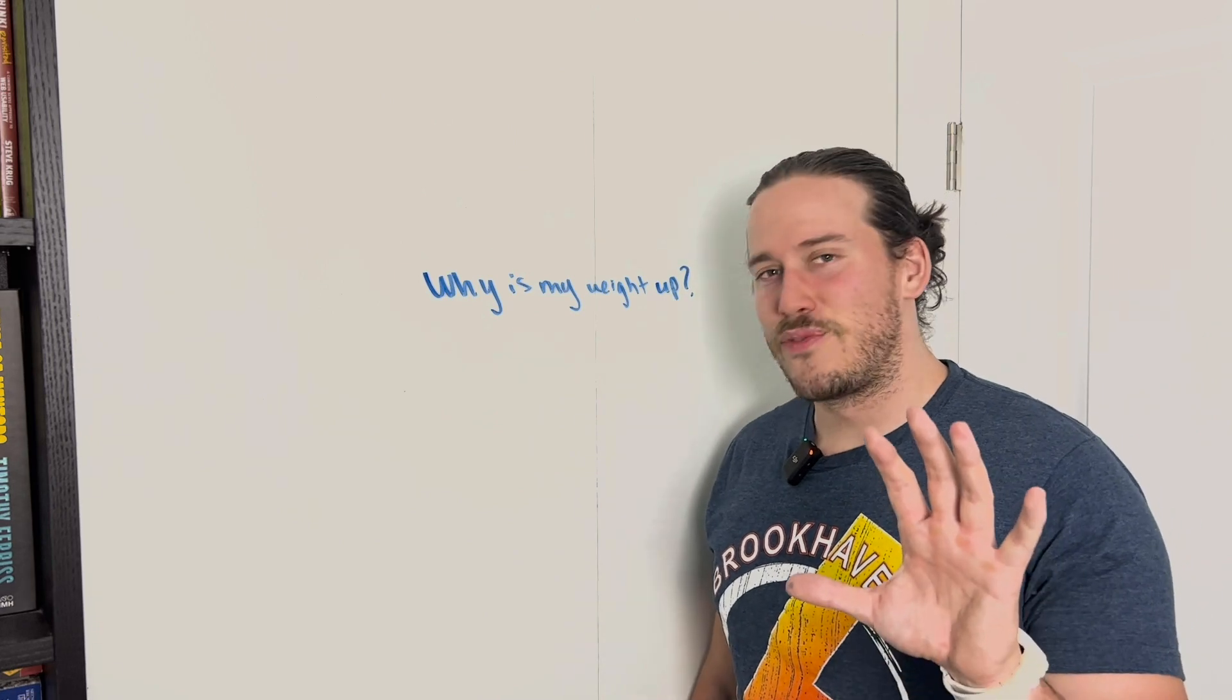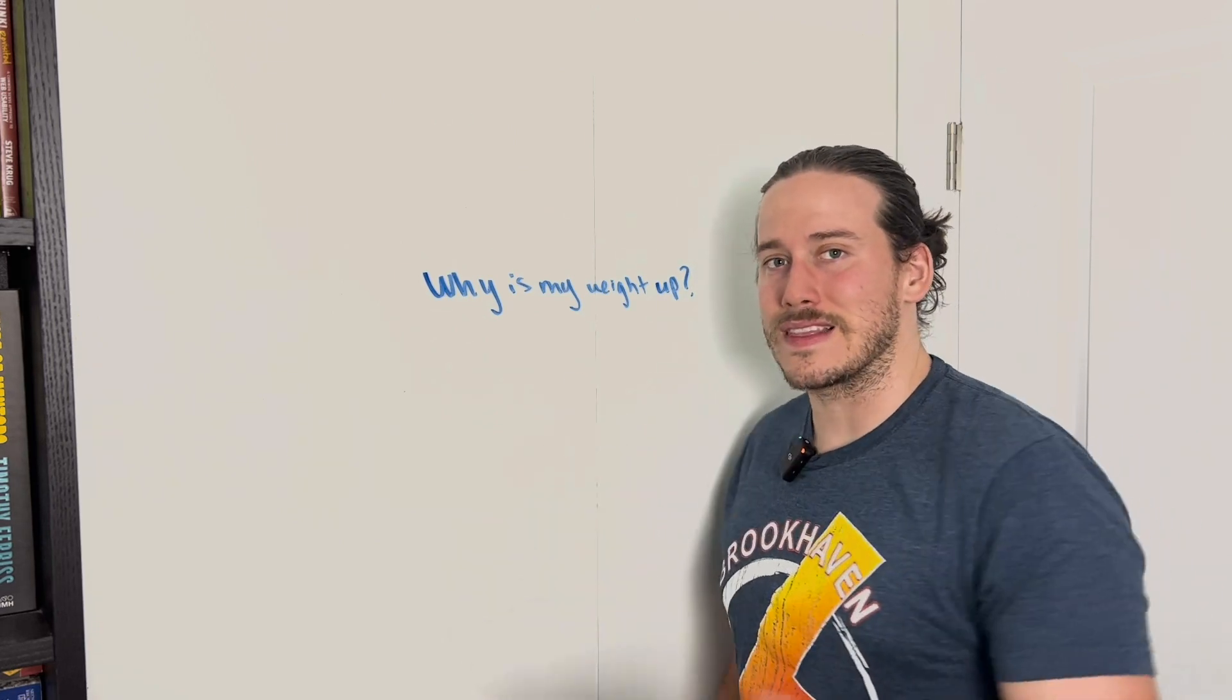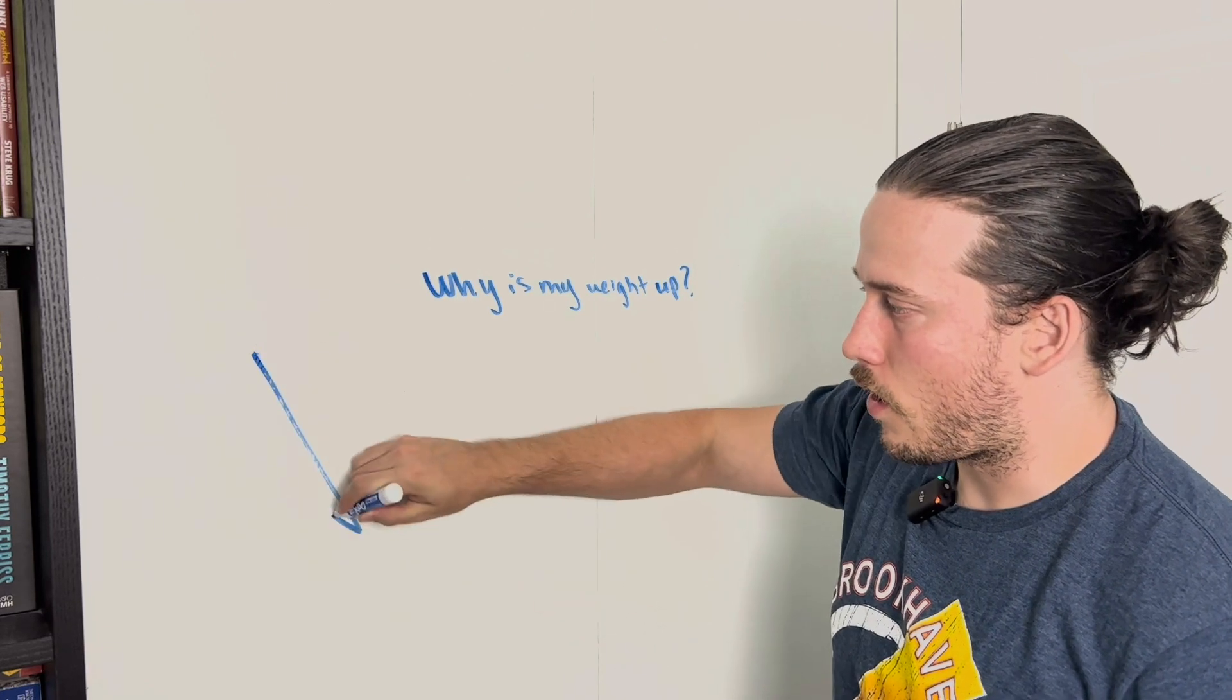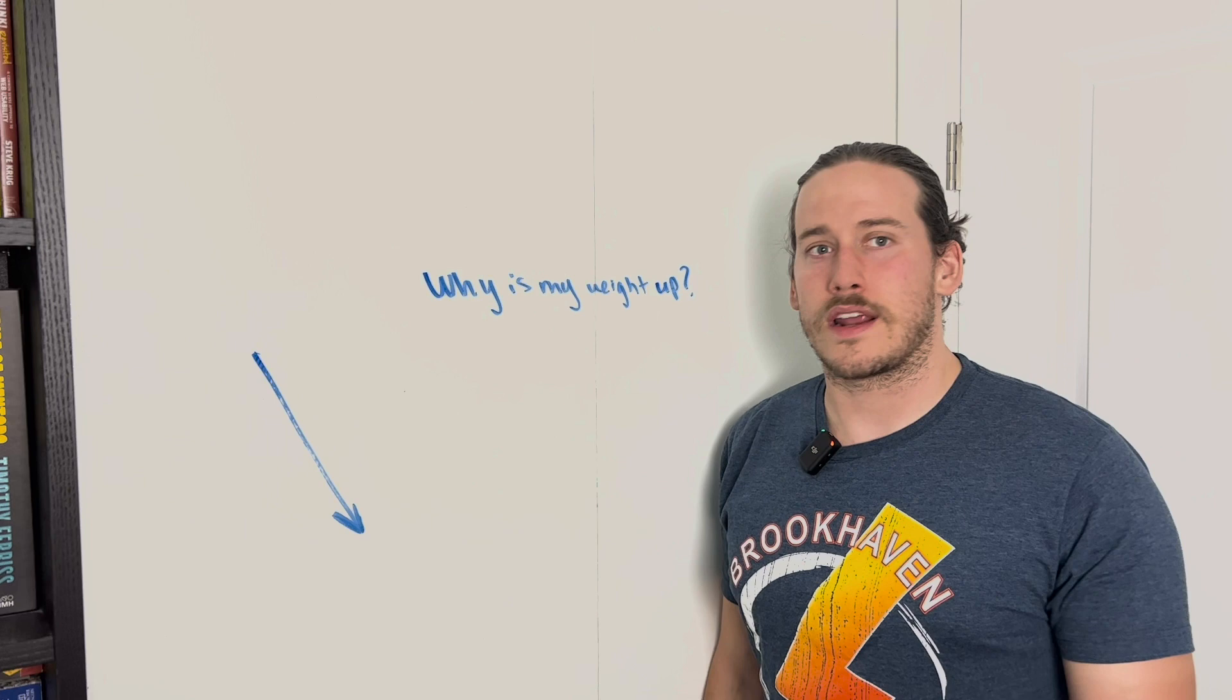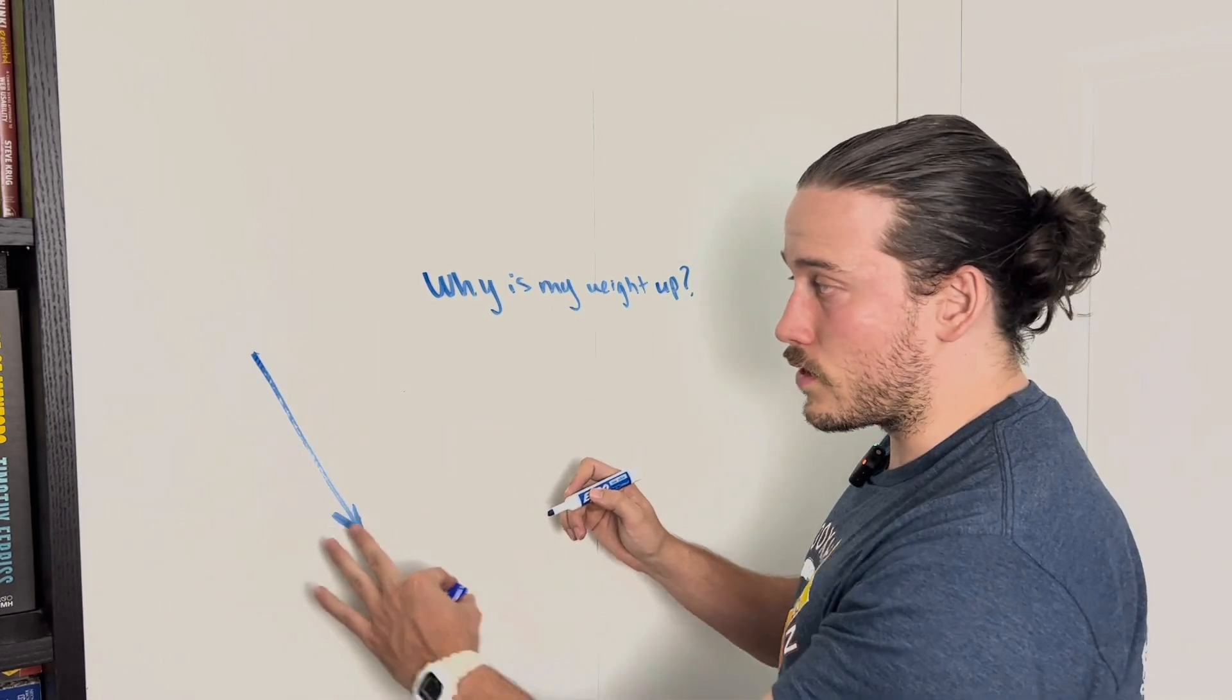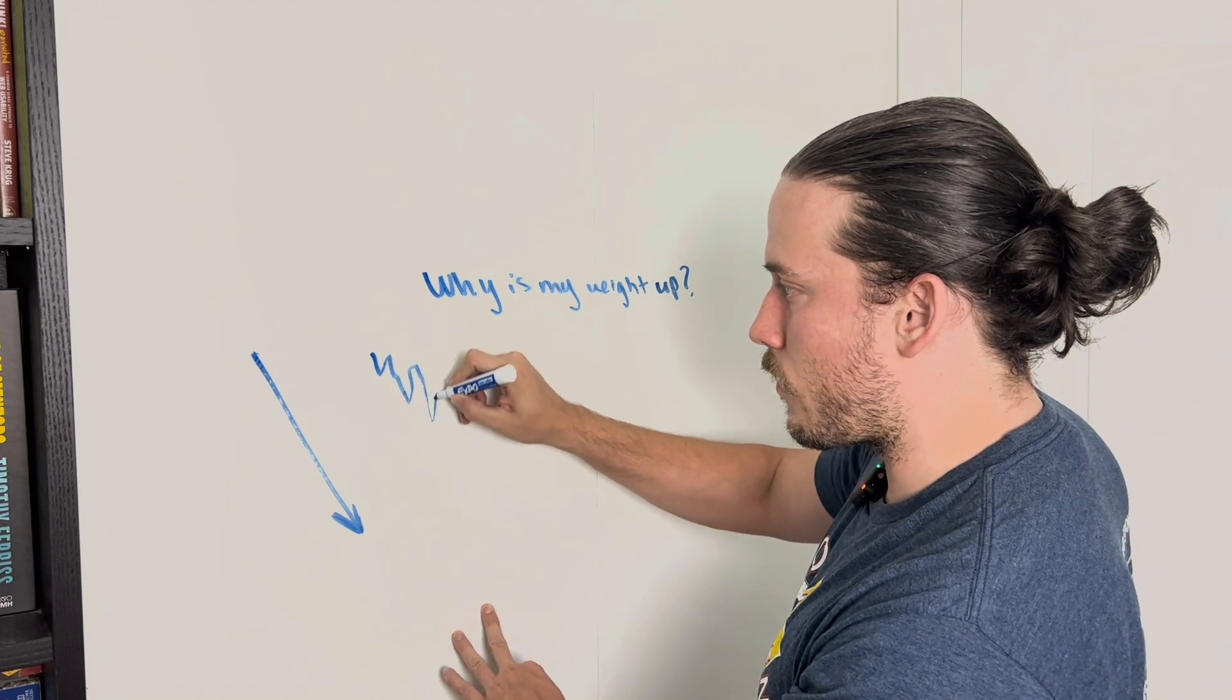Well, the fact of the matter is that weight is not linear. Most of the time, when we think that our path is going to look like that when we're trying to lose fat and we jump in, it might line of best fit look like that, but it's more going to be like this.